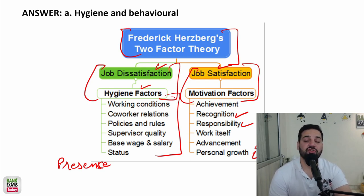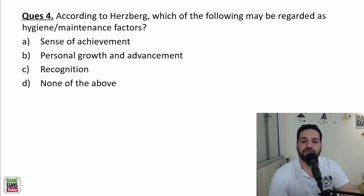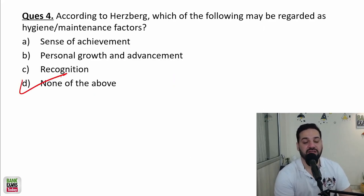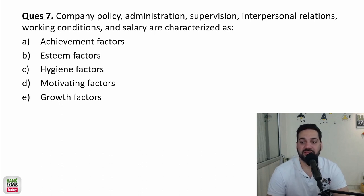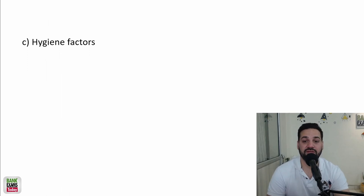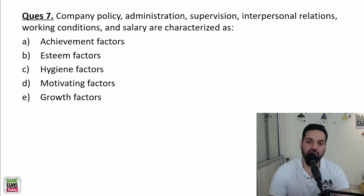This is known as the two-factor theory by Frederick Herzberg — very, very important. According to Herzberg, which of the following may be regarded as a hygiene factor: sense of achievement, personal growth, or recognition? All of them are motivating factors, so none of these is a hygiene factor. Company policy, administration, supervision, interpersonal relations, working conditions, and salary — these are hygiene factors. Please remember that most of the time these questions are going to be repeated in the exam.